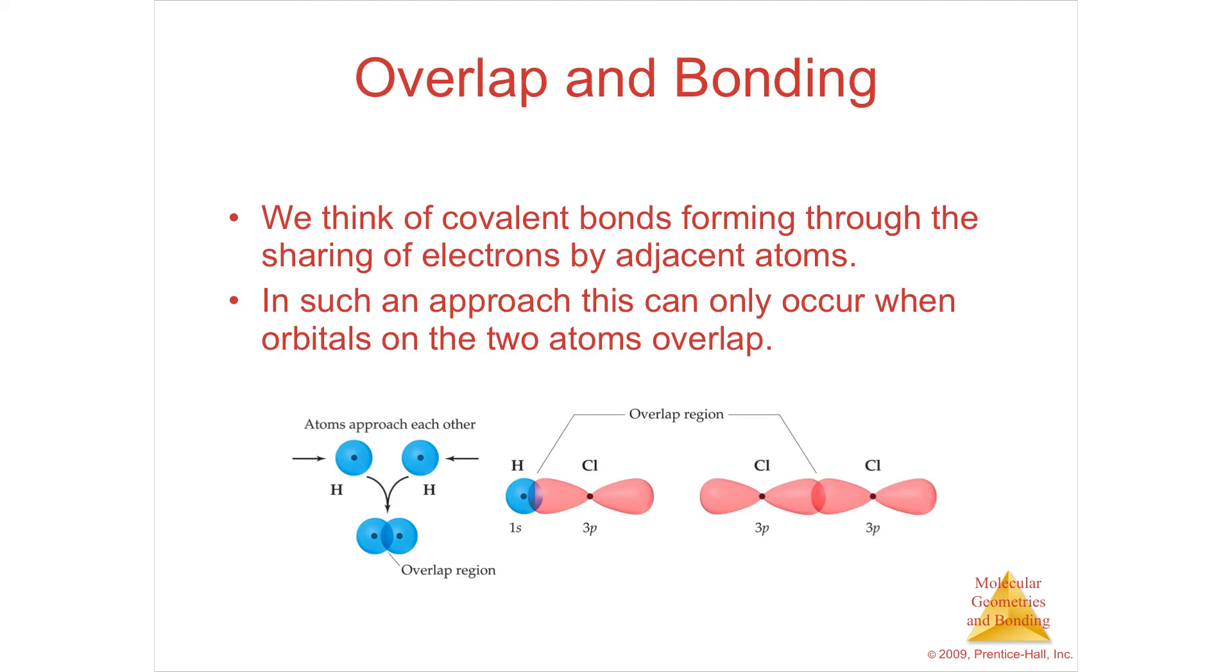This is 9.4 covalent bonding and orbital overlap. We've looked at Lewis structures and know where atoms are and what's attached to what. We then looked at VSEPR theory to have some idea of the shape and location of electrons in a molecule. But that still does not answer the question of why you end up with a bond. Why do two atoms actually connect and make a bond?